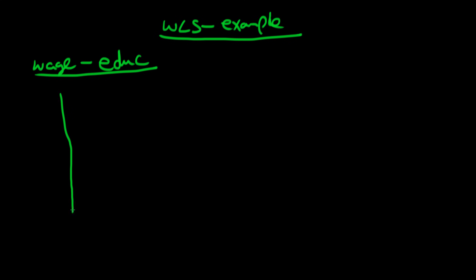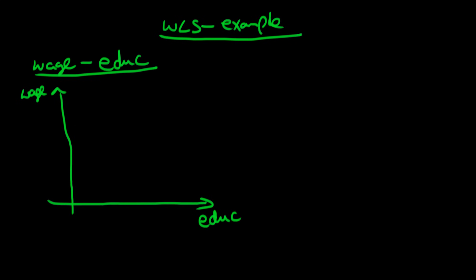If we draw a graph with wages on the y-axis and the number of years of education on the x-axis, we might expect there is some sort of positive relationship between these two variables. That's not to say the relationship is necessarily causative, but an individual with a higher level of education can apply for better paid jobs, so you'd expect a positive relationship.